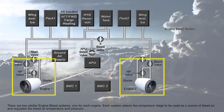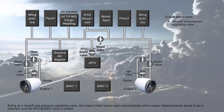There are two similar engine bleed systems, one for each engine. Each system selects the compressor stage to be used as a source of bleed air and regulates the bleed air temperature and pressure. Acting as a shut-off and pressure-regulating valve, the engine bleed valves open pneumatically when engine bleed pressure above 8 psi is detected and the APU bleed valve is closed.